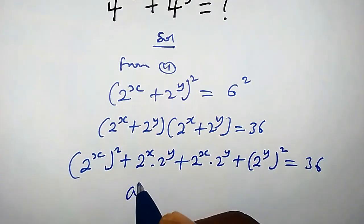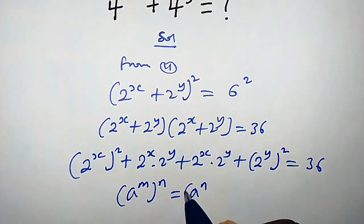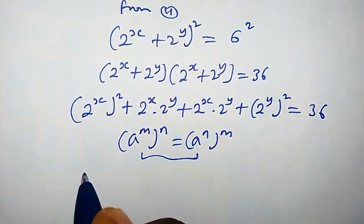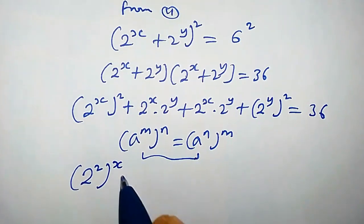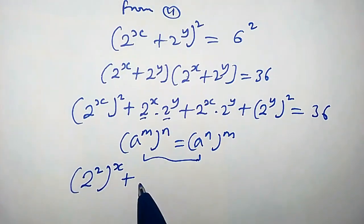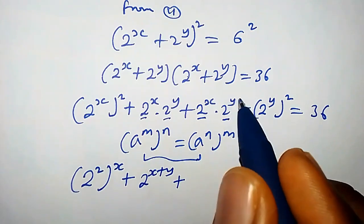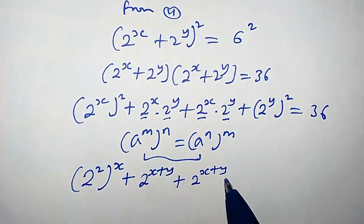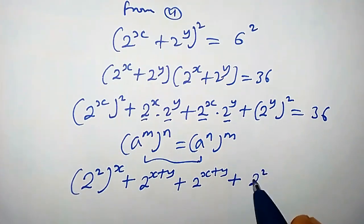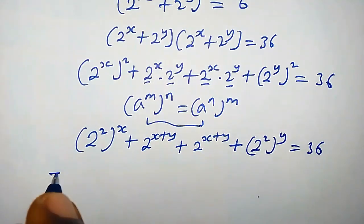Recall that a to the power of m times n can be written as a to the power of n times m. Applying this property, 2^x times 2^x becomes 2 squared times x, and since the base is the same for the middle terms, we can add the powers, giving 2 to the power of x plus y — appearing twice. Similarly, 2^y times 2^y becomes 2 squared times y. This all equals 36.